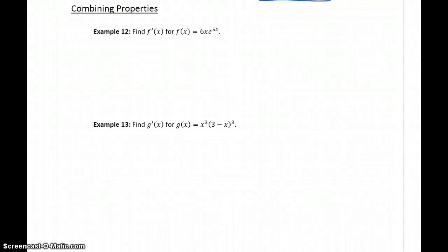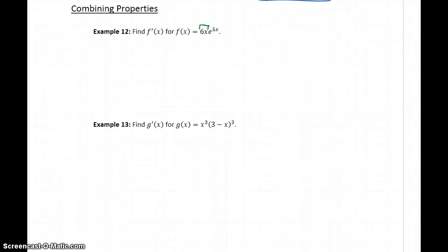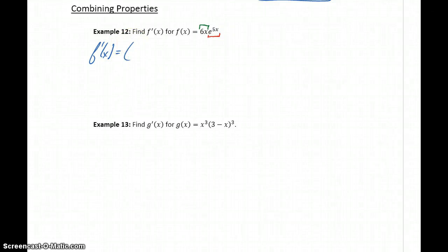We have the potential to encounter very complex functions — functions that will require multiple different combinations of the properties we've established so far in order to differentiate them. So in example 12, for instance, we could start off by recognizing that what we have here is the product of two functions: 6x times e to the 5x. So we could start off by applying the product rule.